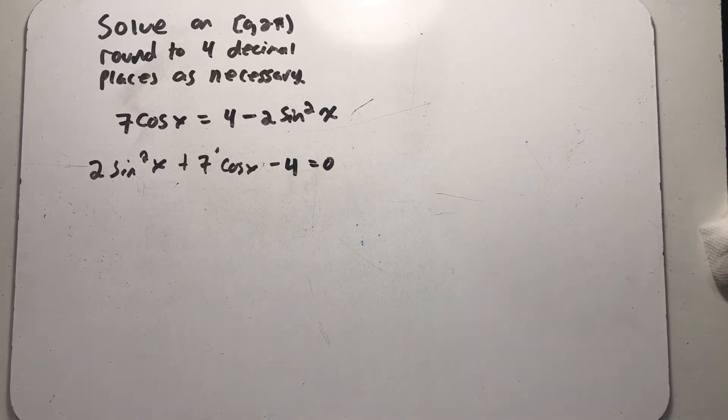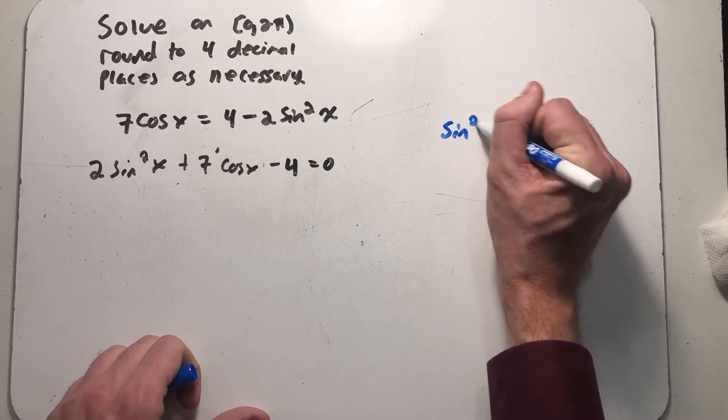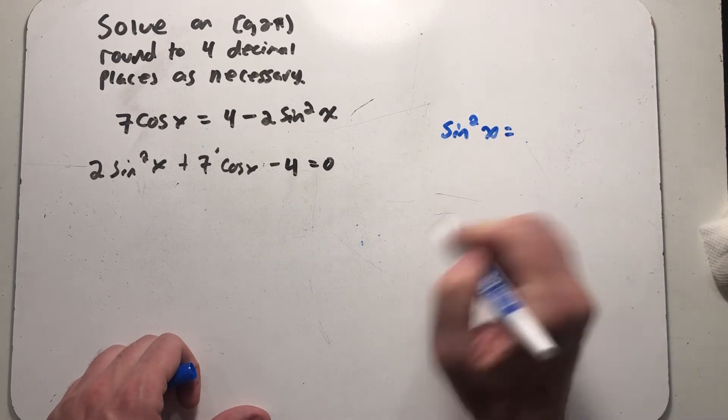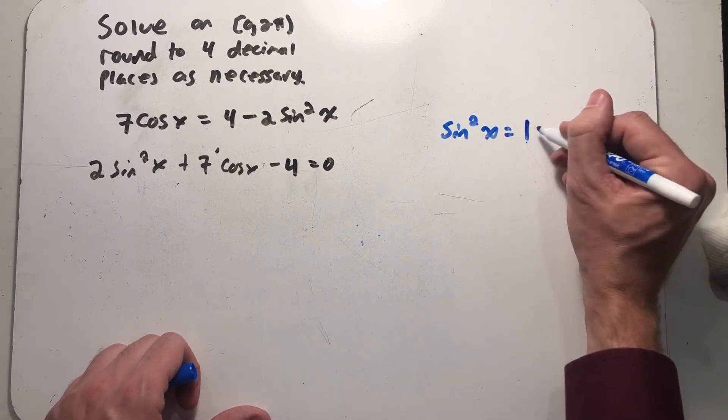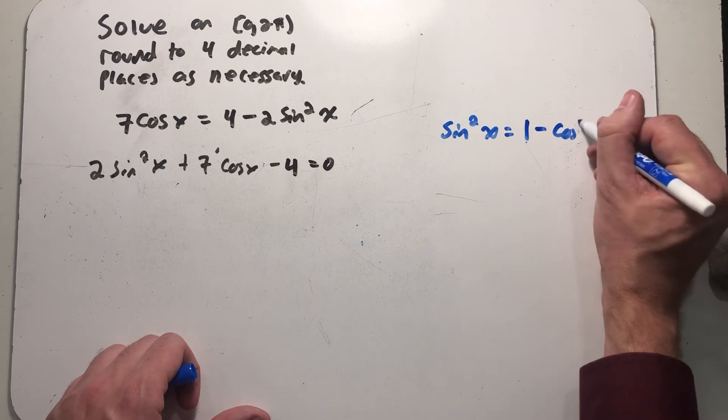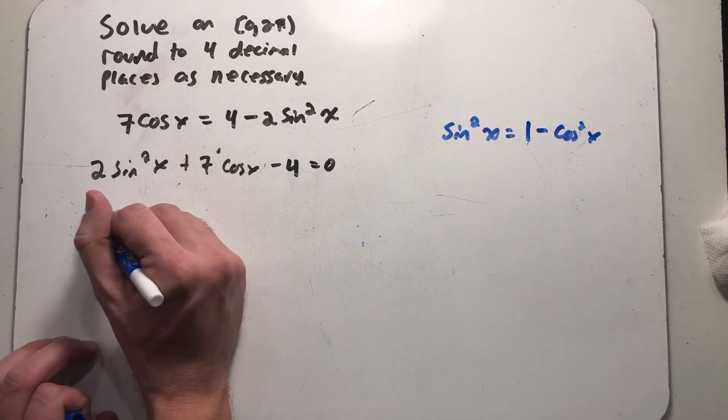So I see sines and cosines. I want to get everything into just one of those. Because I see the sine squared I think I'll be using a Pythagorean identity to make everything in terms of a cosine. So I see sine squared x which I know is equal to 1 minus cosine squared x. So I'm gonna go on make that substitution.